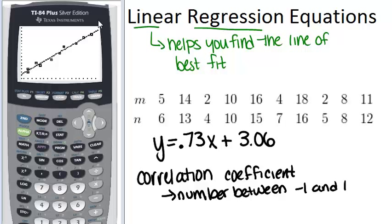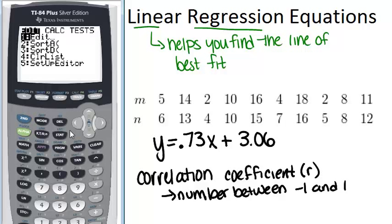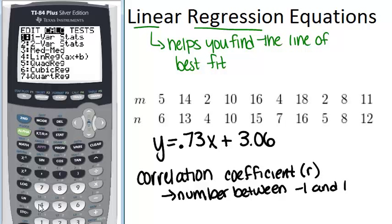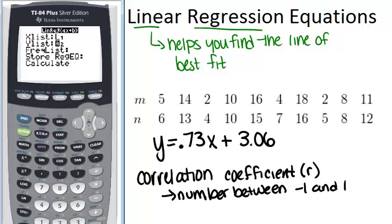And the closer the number is to 1, or negative 1, then the better the line is. So to figure out the correlation coefficient, which is used, or the letter r is used to represent the correlation coefficient, you're going to go back into the calculate, so stat, calc, and push for again. And do that again until we've calculated. And this time, I can see this thing, r squared and r. And r is my correlation coefficient.